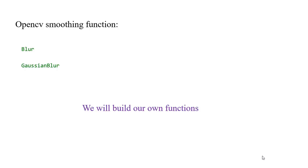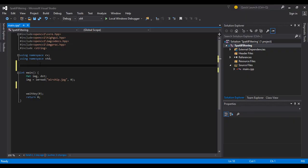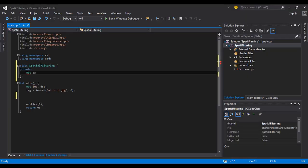OpenCV provides us with built-in functions to apply smoothing filters, but as usual we will build our own function. I will define the class spatial filtering. The first member function is padding.